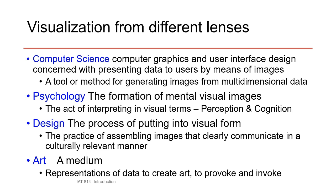The first one listed here is computer science. What computer scientists tend to be interested in is computer graphics and user interface design — concerned with presenting data to users by means of images, which is basically what the topic of this course is about. The kind of thing computer scientists are interested in doing is, among other things, creating tools or methods for generating images from multidimensional data.